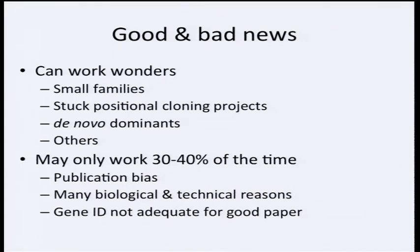At the Gordon conference on genetics and genomics this summer, there was quite a bit of discussion about how often exome sequencing works for Mendelian disease projects. The consensus from speakers doing really good work in this area is that it works about 30 to 40 percent of the time — so again, it's not magic. We're all subject to publication bias; not too many people want to publish unsuccessful exome gene identification projects.